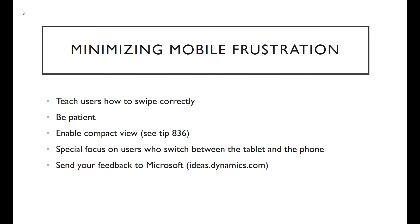To minimize this frustration, I recommend that you teach your users who use Dynamics 365 Mobile for Phones on how to swipe correctly, or maybe send them this video. Encourage them to be patient — swiping more will not make it go faster. If you haven't already, consider enabling Compact View. This will stack components like dashboard charts, reducing the amount of horizontal scrolling necessary. See tip 836 at crmtipoftheday.com for instructions.